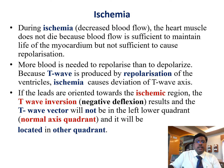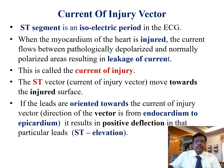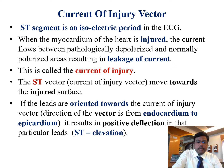During ischemia, blood flow decreases so the heart muscle does not die, but blood flow is insufficient to cause depolarization. More blood is needed to repolarize than to depolarize, because the T wave is produced by repolarization of the ventricles. Ischemia causes deviation of the T wave axis. If the leads are oriented towards the ischemic region, T wave inversion results, and the T vector will not be in the left lower quadrant. Regarding current of injury: when the myocardium is injured, current flows between pathologically depolarized and normally polarized areas, called the current of injury. The ST vector moves towards the injured surface, and leads oriented towards this vector show positive deflection resulting in ST elevation.